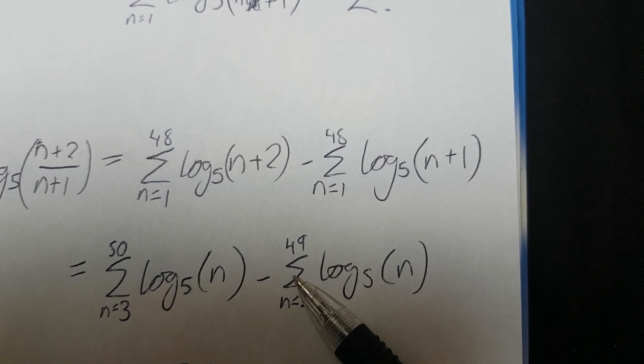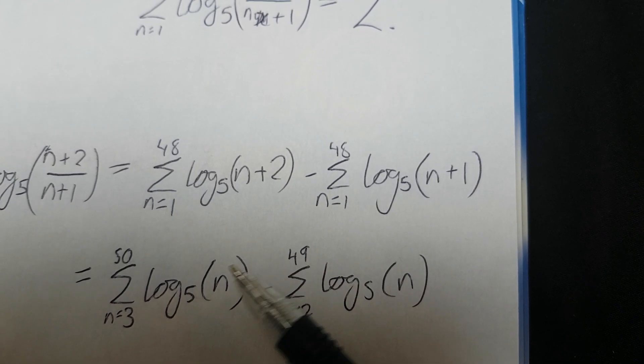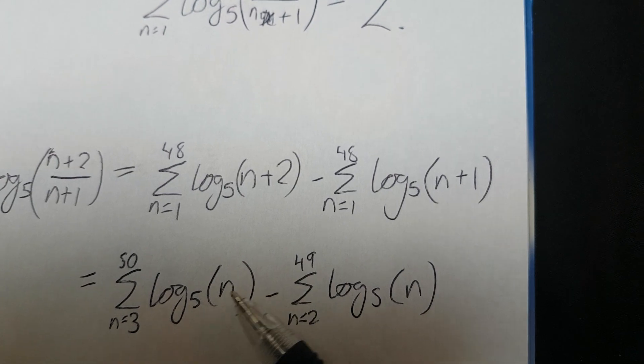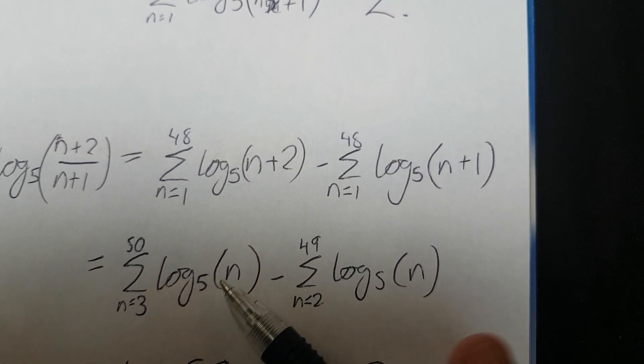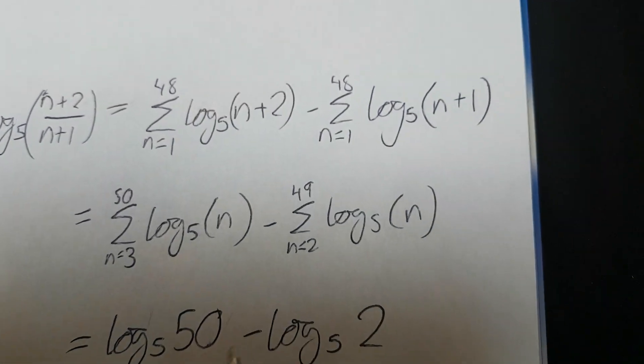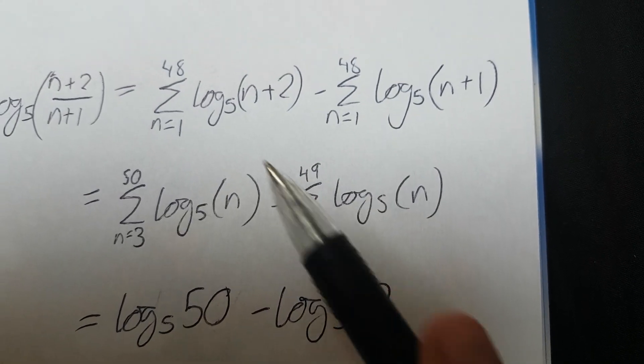Now, on this one, there's a significant amount of overlap. So for example, both of these have 3, both of them have 4, both of them have 5. And if you take them away, it makes it all simple, and it all simplifies down just to log 50 minus log 2.